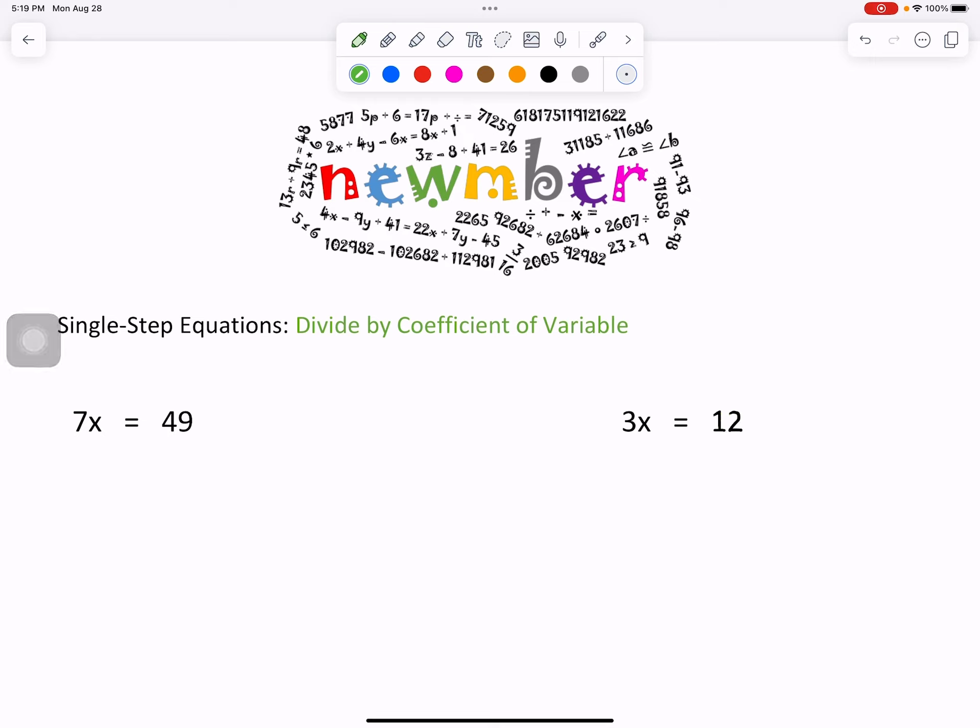Let's divide by that coefficient of x, which is 7, but what we do to one side of the equal sign? Yes, we must do to the other.